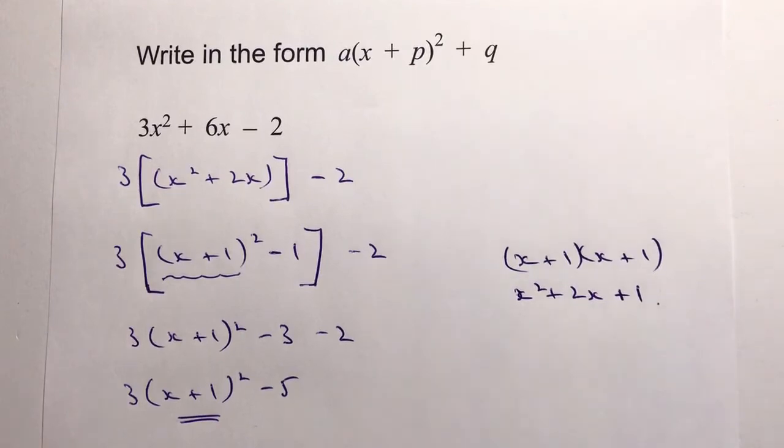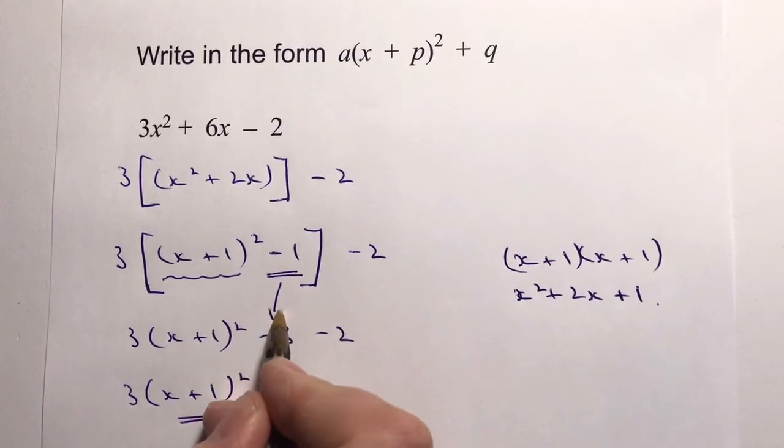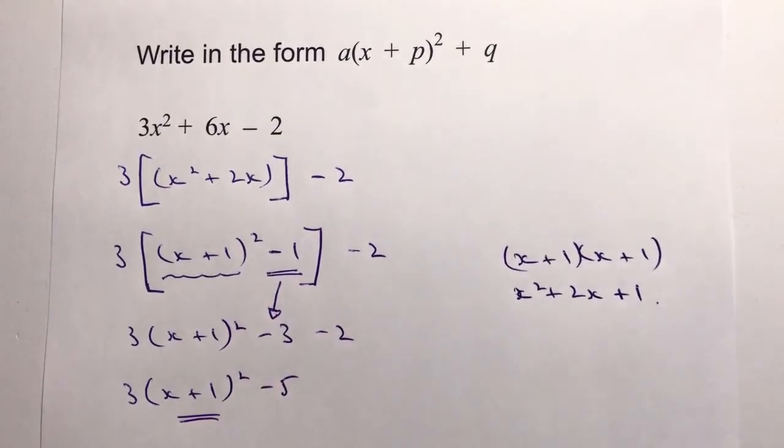What I need to do is deal with this -1 here, and that -1 becomes the -3 there.